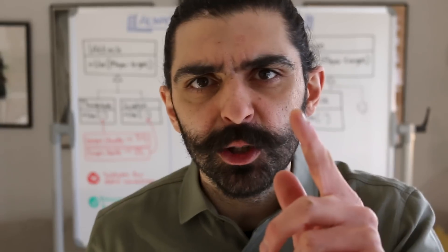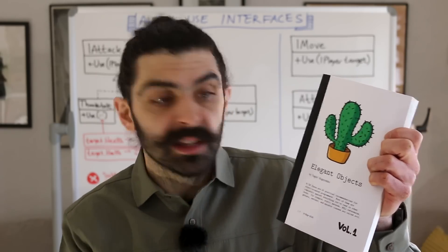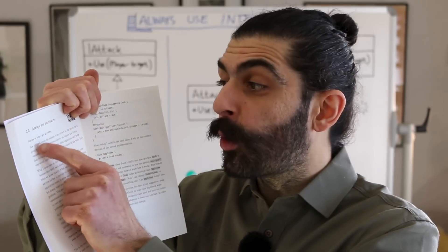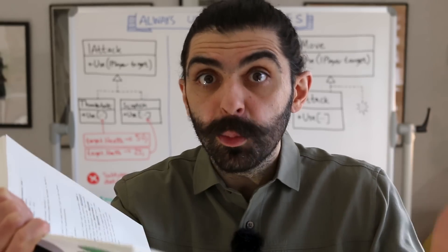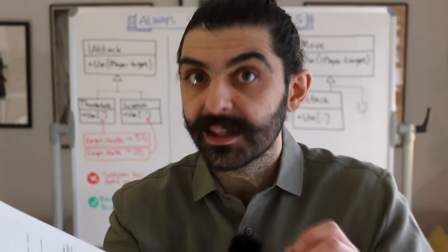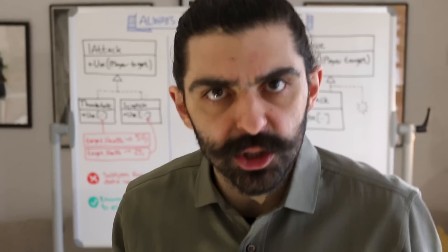Couple to abstractions and not to concretions — it's one of these classic object-oriented principles. But how do we actually follow it? In the book Elegant Objects by Yegor Bugayenko, he has a chapter called 'Always Use Interfaces,' where he discusses the importance of coupling to abstractions because it improves maintainability, meaning we can change the code.